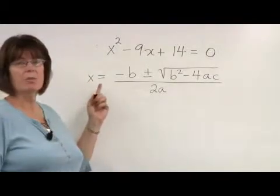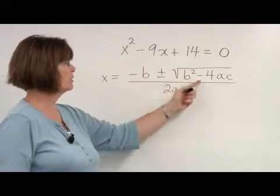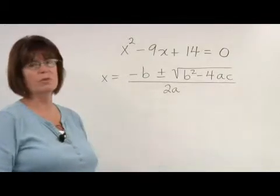This is the formula: x equals negative b plus or minus the square root of b squared minus 4ac, all over 2a.